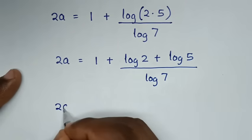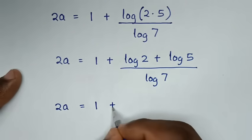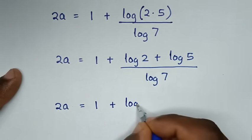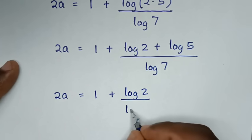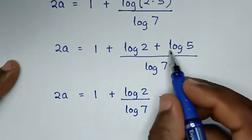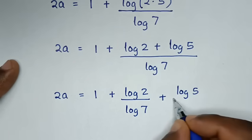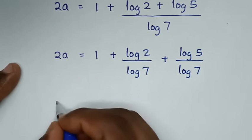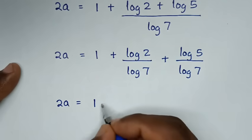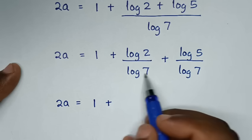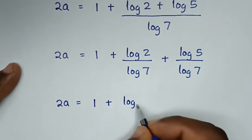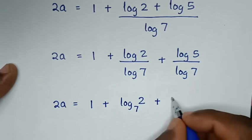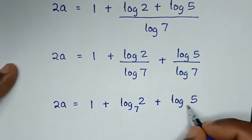Then in the next step, 2A is equal to 1 plus — dividing log of 7 into each part: log of 2 over log of 7 plus log of 5 over log of 7. Then log of 2 over log of 7 is the same as log base 7 of 2, plus log of 5 over log of 7 is the same as log base 7 of 5.